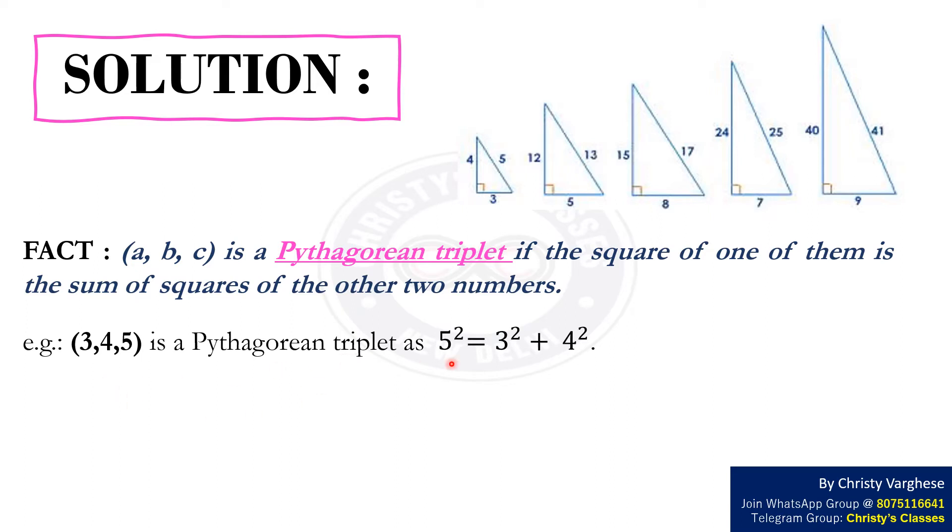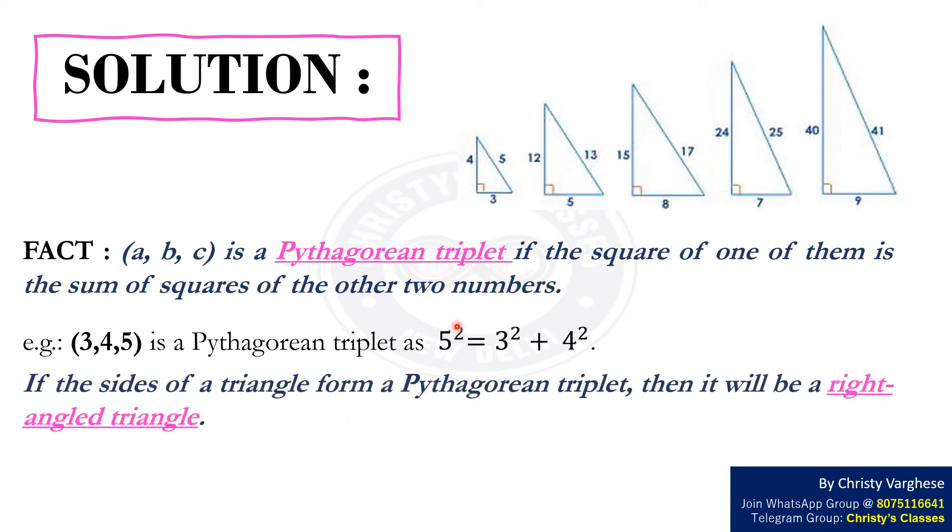Here, 5 square equals 3 square plus 4 square. Therefore, 3, 4, 5 is a Pythagorean triplet. If the sides of a triangle form a Pythagorean triplet, then it will be a right angle triangle. Here are some examples for Pythagorean triplets.